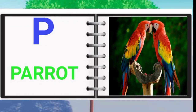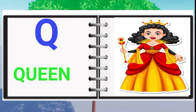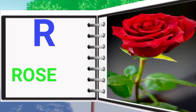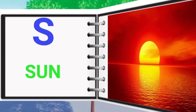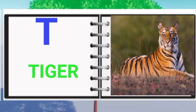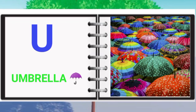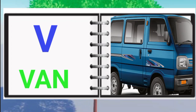P for horse, R for horse, S for son, T for tiger, U for umbrella, V for lion.